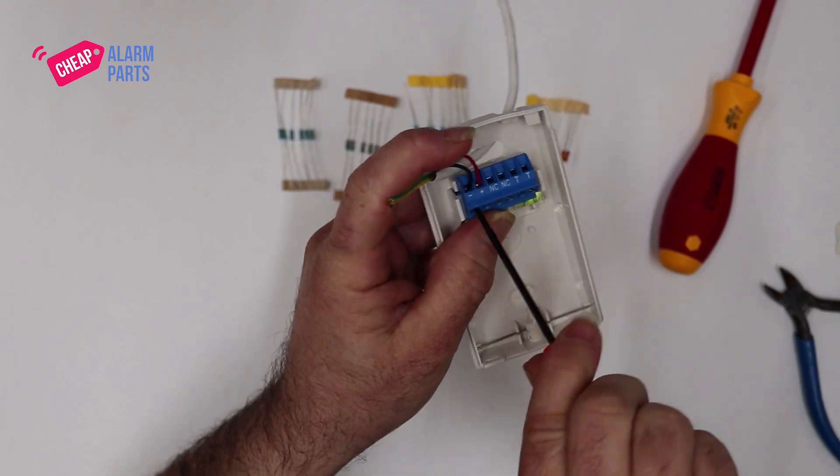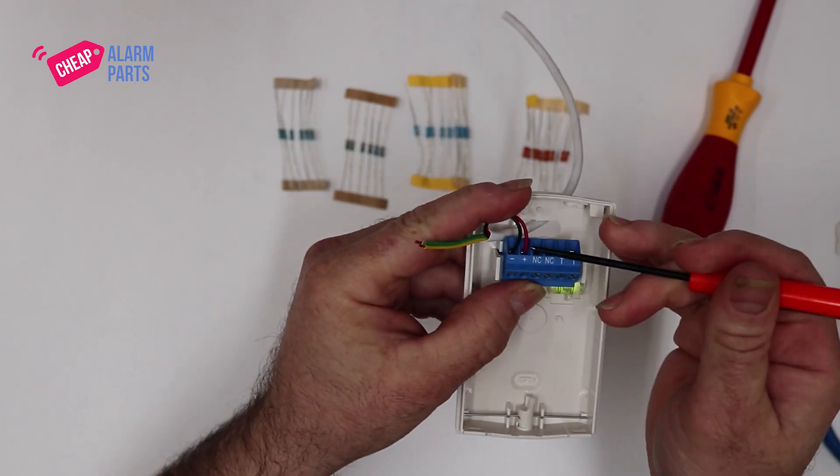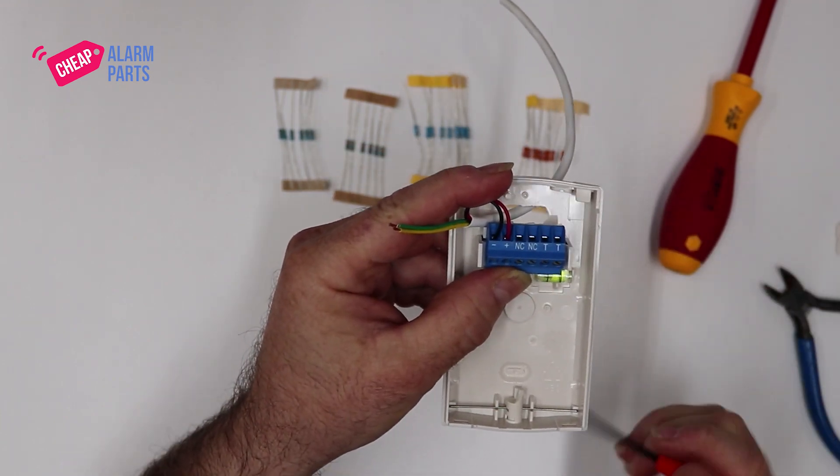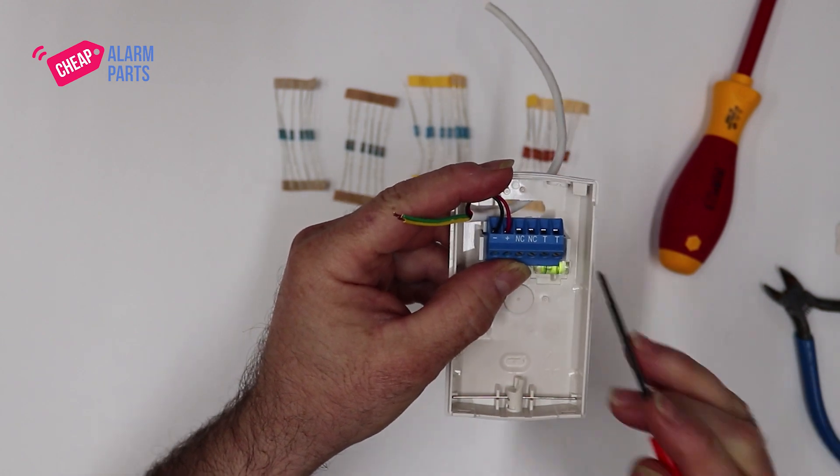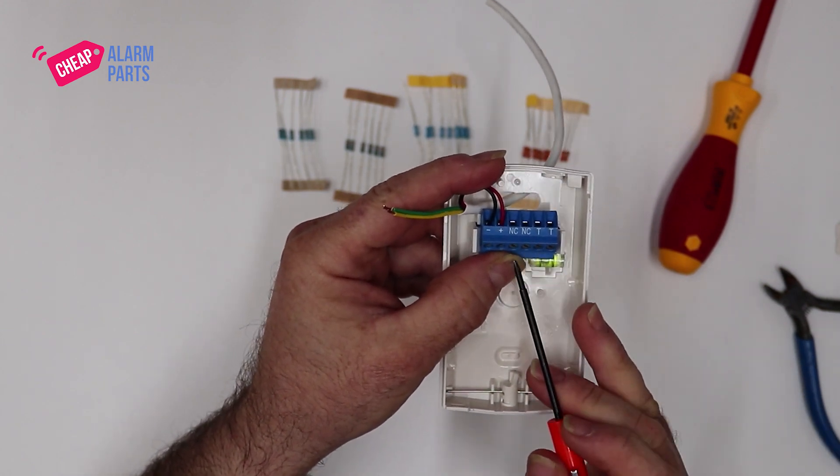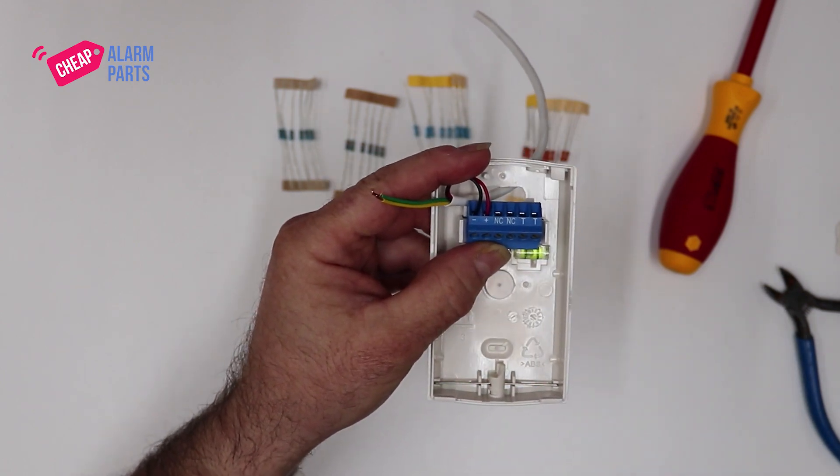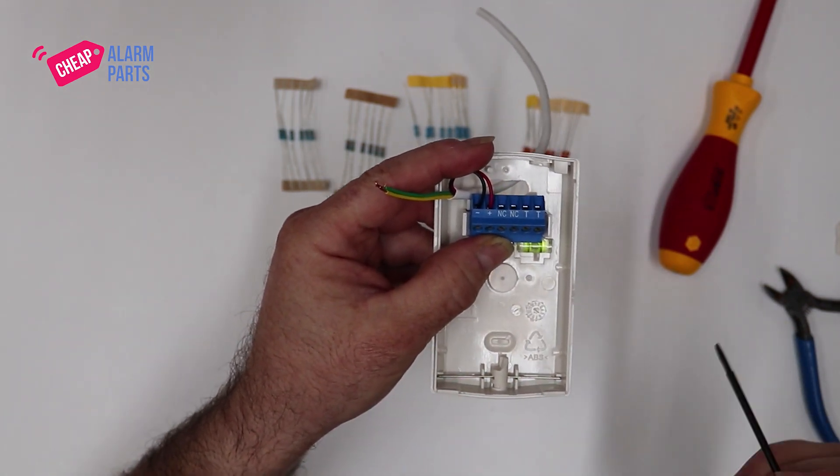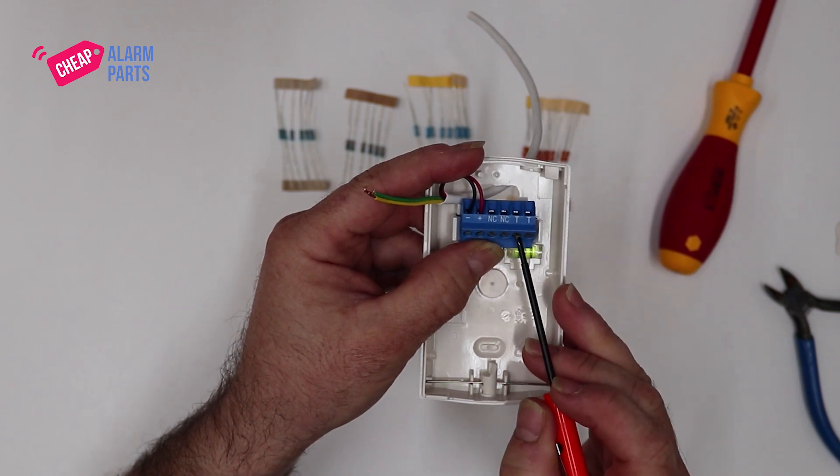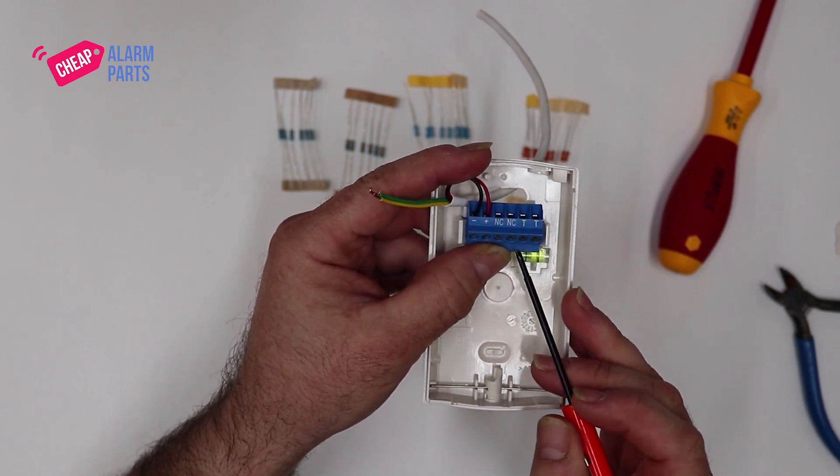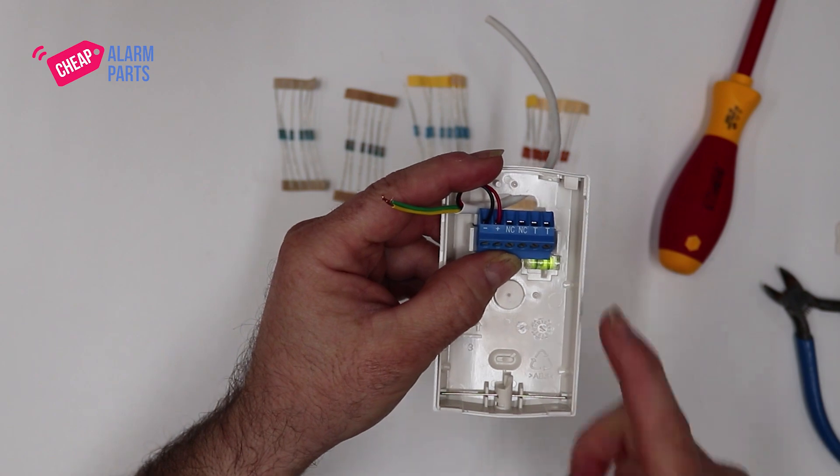Also, when you're done, make sure there's no little bits of copper sticking out of the terminals which could cause a problem later. Now, the next two terminals are the alarm contacts. These are normally closed when there's no movement and they open when the sensor sees movement. The next two terminals are the tamper contacts, and this tells us if the sensor is still attached to the back unit.